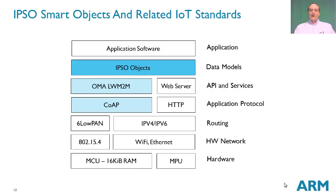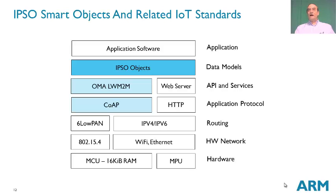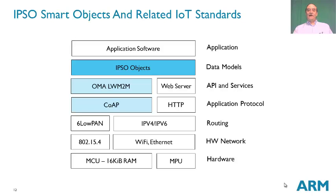This is what the full stack looks like — the constrained device stack on the left, going from microcontrollers through 802.15.4, 6LoWPAN, CoAP, OMA Lightweight M2M, and IPSO Smart Objects. IPSO Smart Objects as a data model can run on many different protocols, providing a common data model for any application software running on any communication stack. The rest of the presentation will focus on the details of CoAP, OMA Lightweight M2M, and IPSO Objects as they work together to provide a modular set of IoT standards.